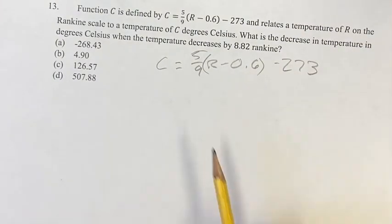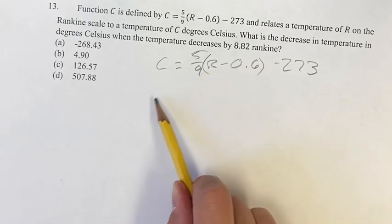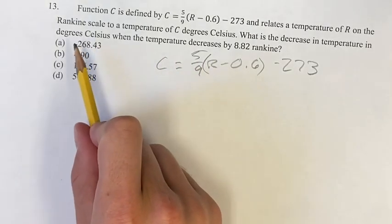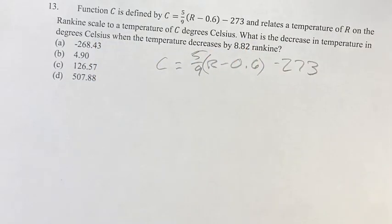And this relates the degrees in Rankine, R, to degrees Celsius, C. We're asked, when you decrease Rankine by 8.82, what is the decrease in Celsius?